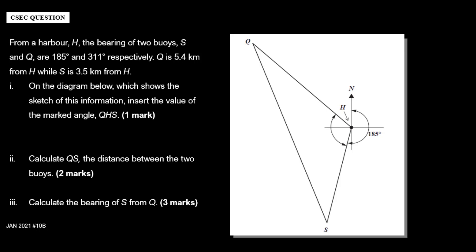Now let's start with the first one. It says on the diagram we want to insert the value of angle QHS. So first let's identify what that angle is — QHS. That's the angle right here. What do we already know? Let's go to the information in the question. It says that from a harbor H, the bearing of two buoys S and Q are 185 degrees and 311 degrees respectively.